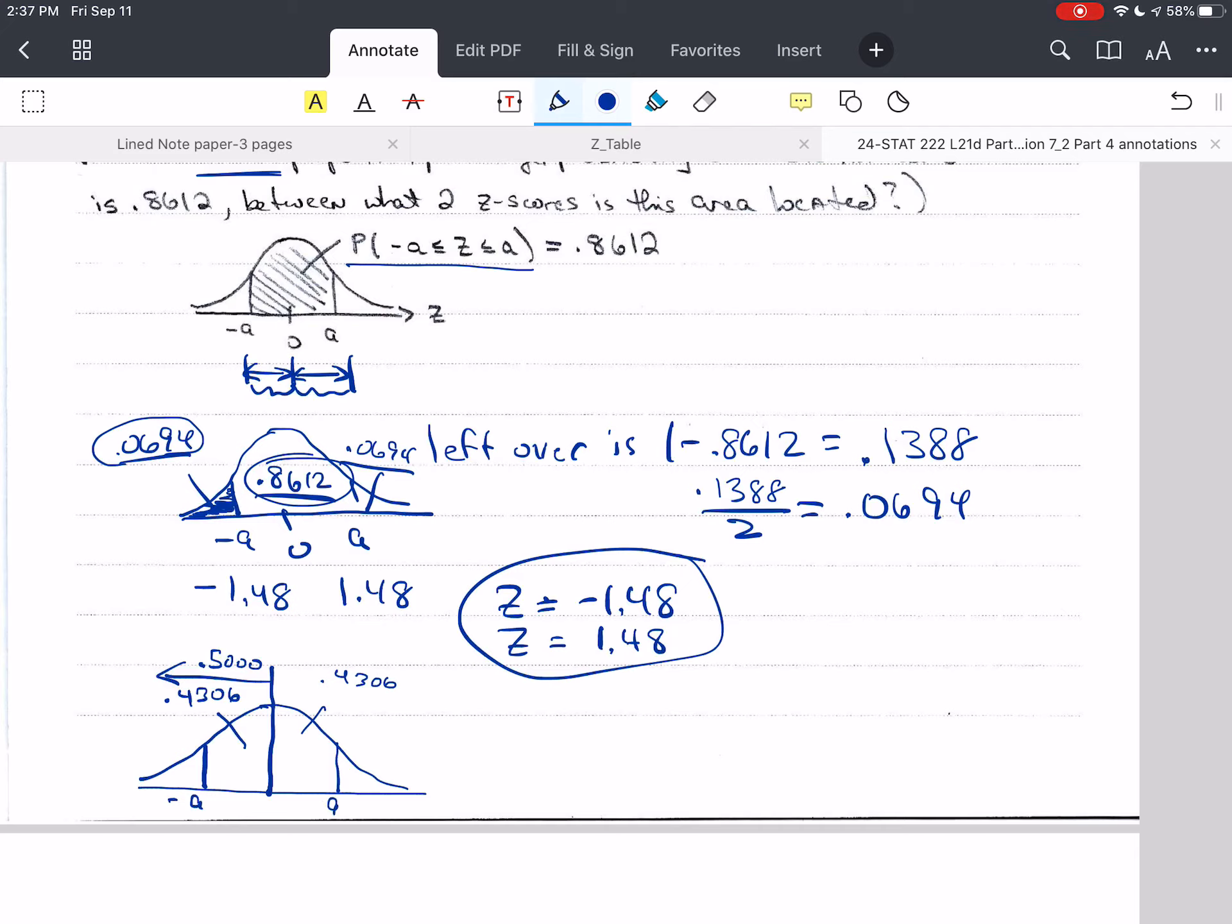0.4306 together, that adds up to 0.8612. So if this is 0.4306, then this area down here that I need to find negative a is 0.5 minus 0.4306, which is 0.0694. It had better be, it's always going to be the same if we do it correctly. So again, we look up 0.0694 in the table, that gives us negative a.